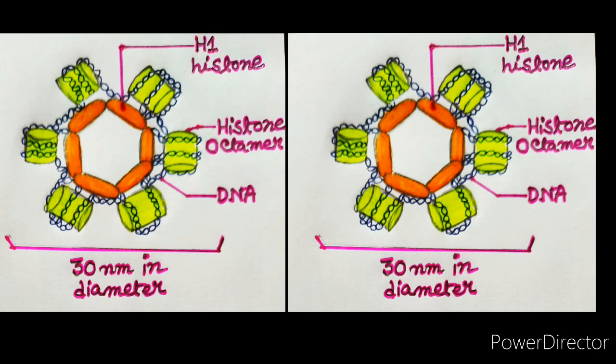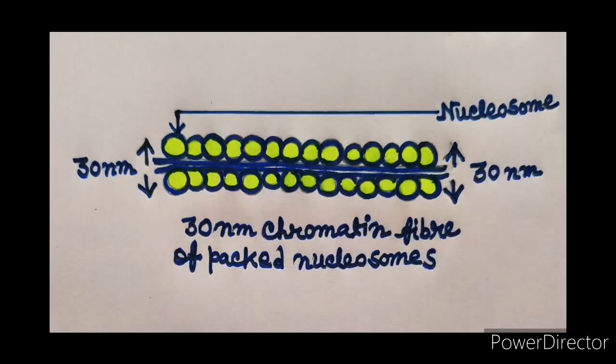But again, this condensed form of chromatin is still not enough. Further condensation is necessary. The ultimate goal is to make the most condensed form of DNA in the process of DNA packaging. The most condensed form is the chromosome.